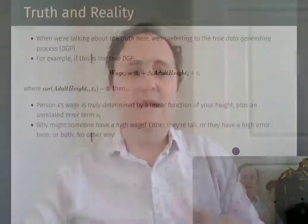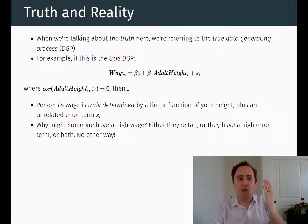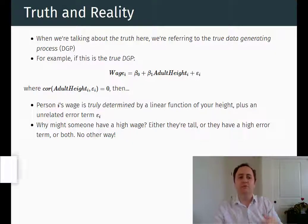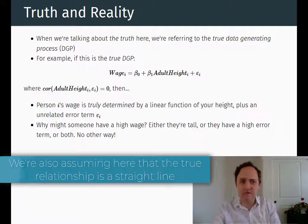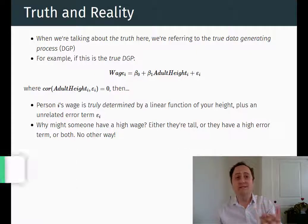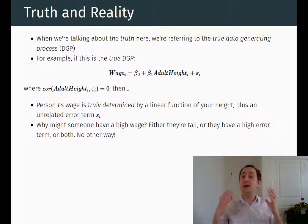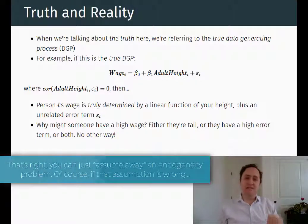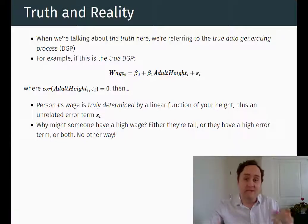So we have this idea that we want to learn about the true model. Let's say the true model is that your wage is based on how tall you are — the taller you are, the more you get paid — and then there's some error term that's unrelated to your height. If we gathered some data and did an estimate of this model, we wouldn't have an endogeneity problem, because we've assumed there's no relationship between height and the error term. But we would still have sampling error, and we'd still have a sampling distribution for our estimator, which could lead to us getting an estimate that doesn't make sense.